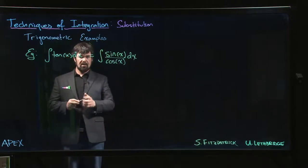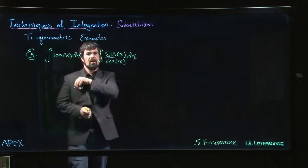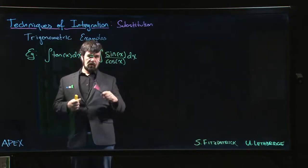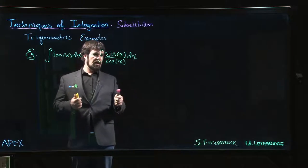Now, this actually does suggest a substitution. We know that the derivative of sine is cosine. We know that the derivative of cosine is negative sine.